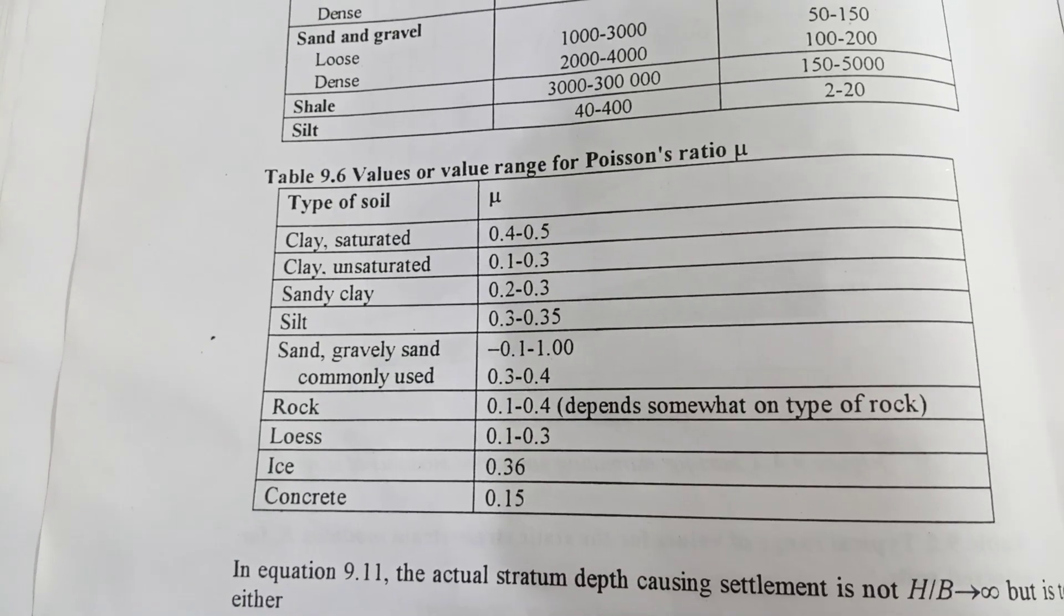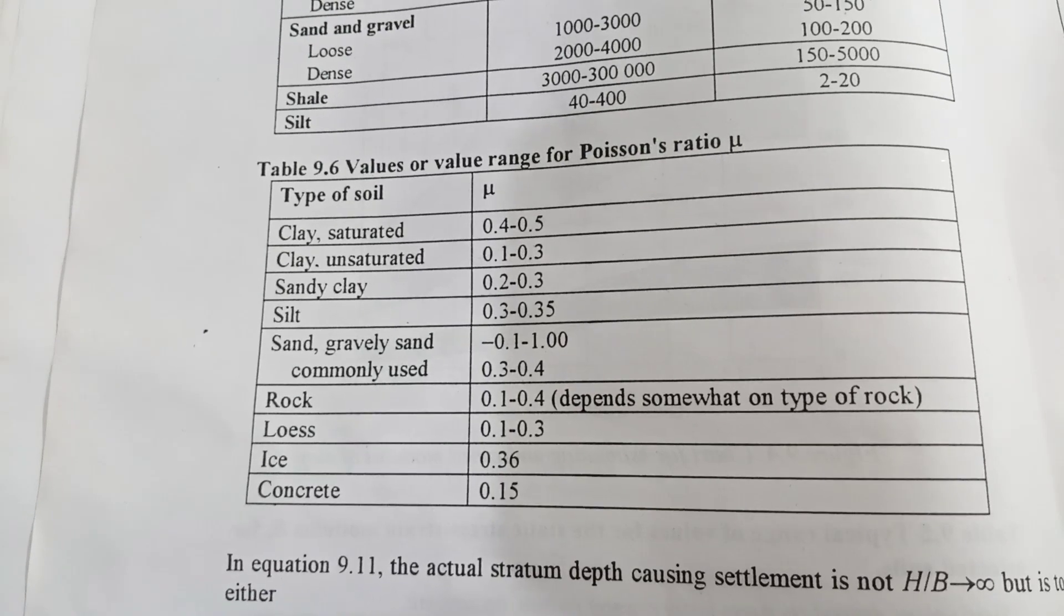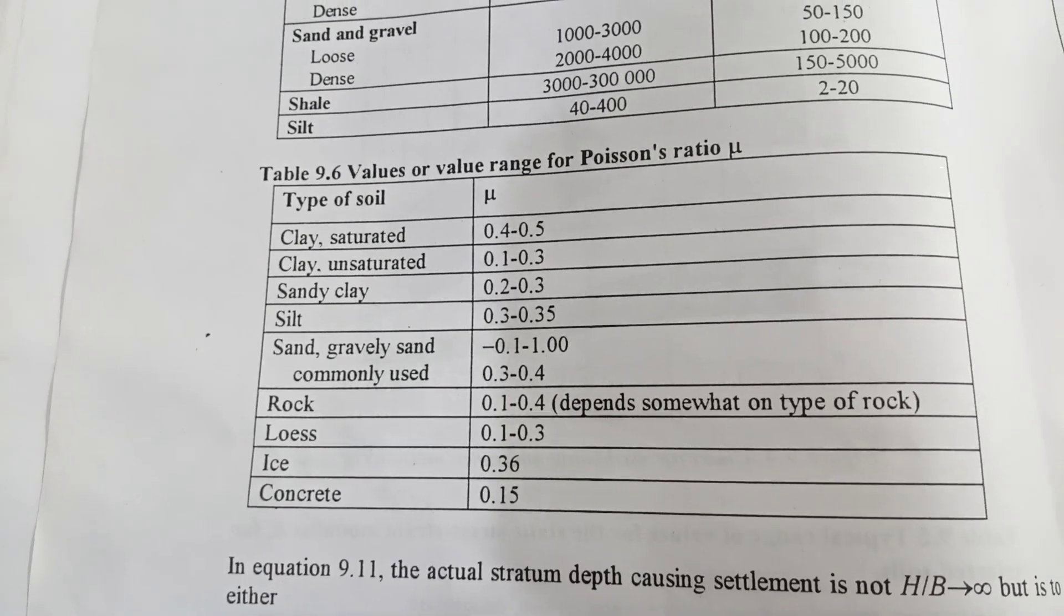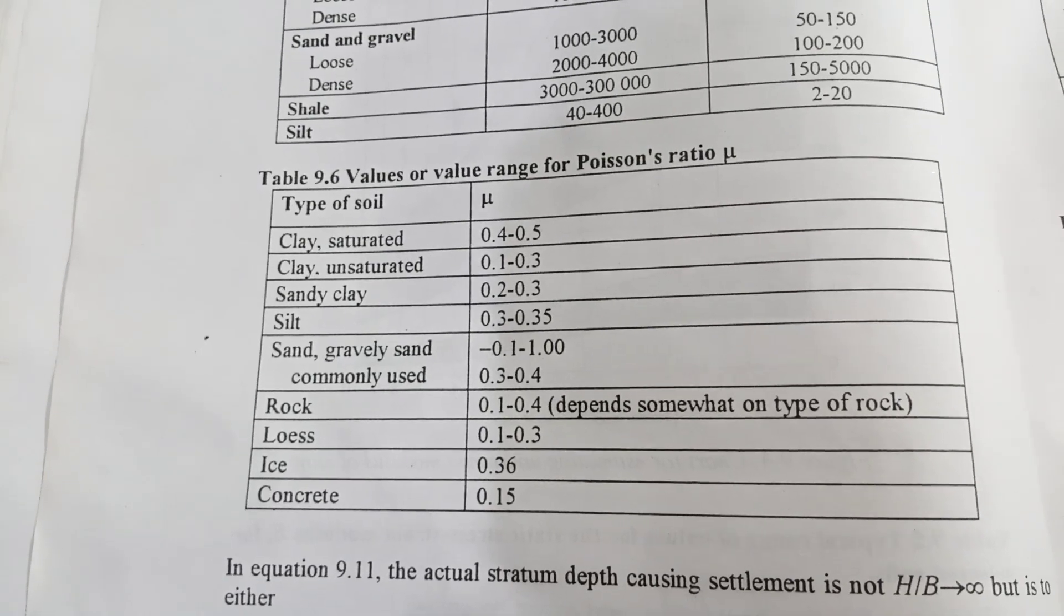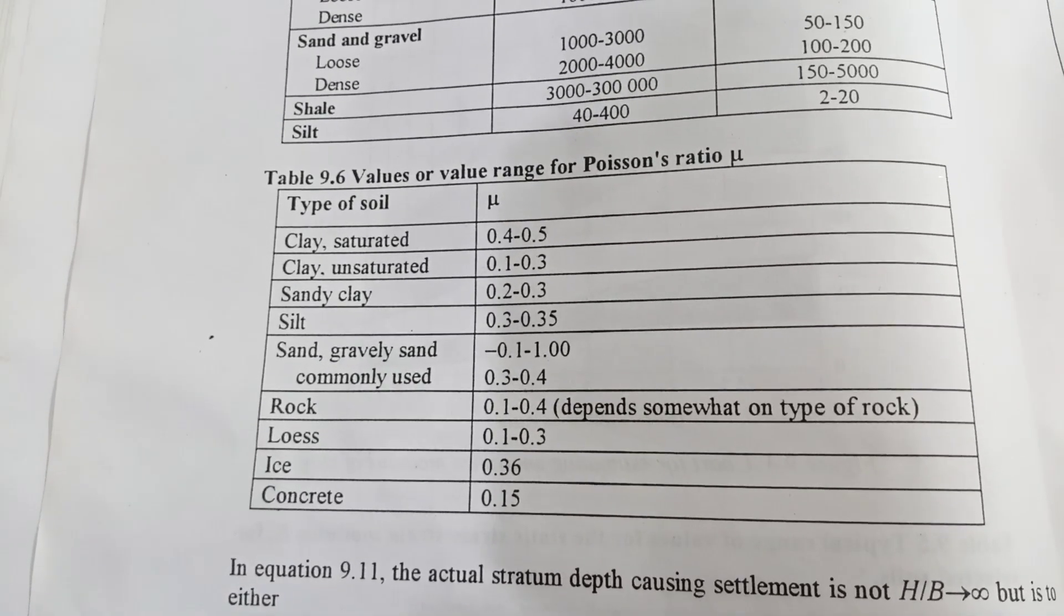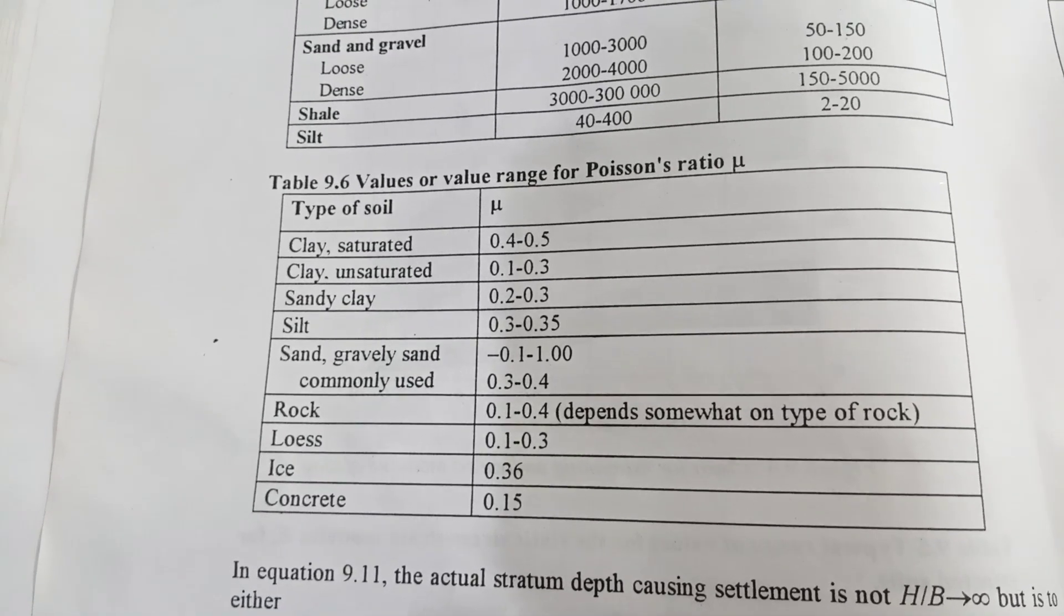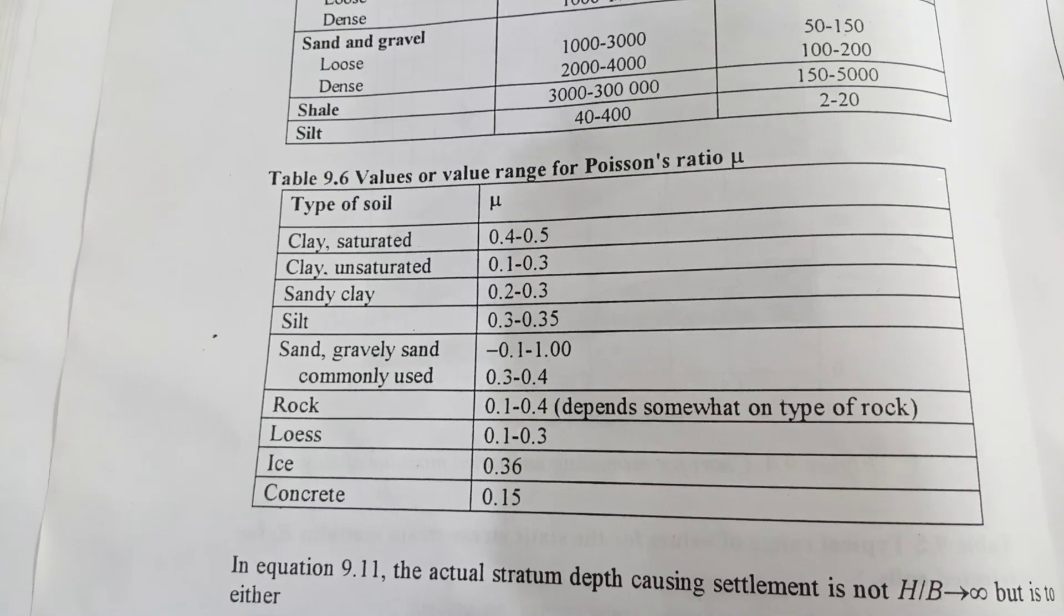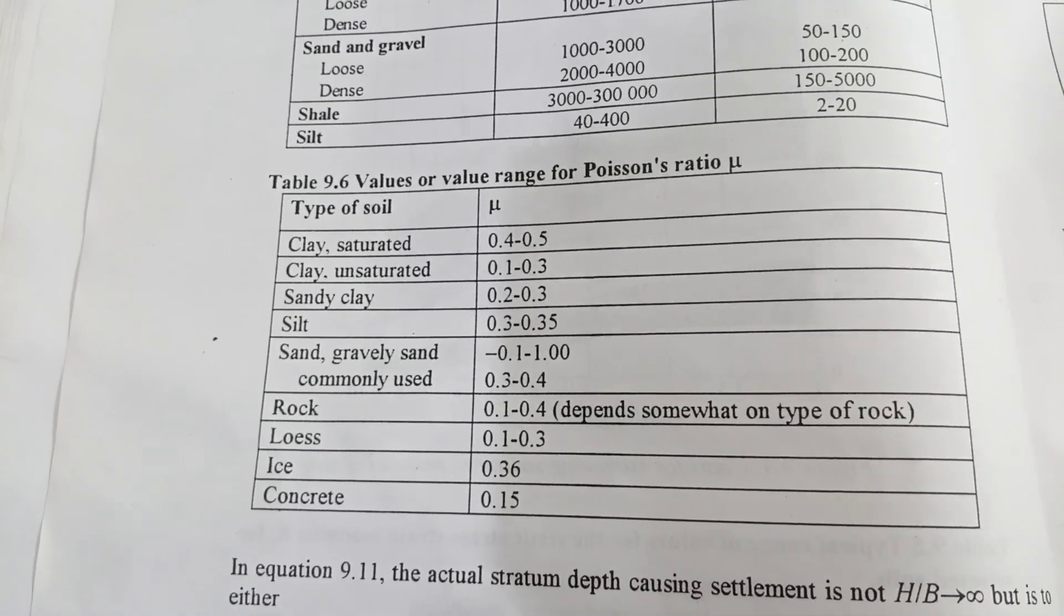One column is type of soil, the other is the Poisson's ratio. You need to remember this table. So in our case, soil type is clay and it is unsaturated. So its value varies between 0.1 to 0.3. You can take 0.1 or you can also use 0.3. It depends upon you. The answer will not be affected much because it is a given value. So from this value, our formula values are complete.